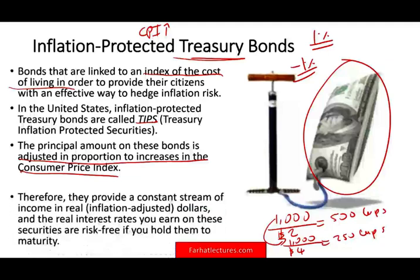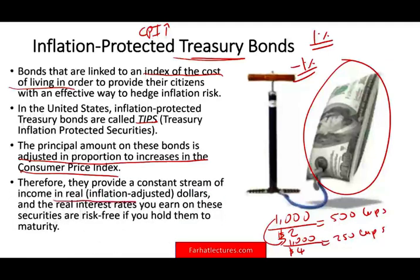TIPS provide a constant stream of income in real dollars. If inflation is 3% and they promised 2%, they'll pay you 3% — so in real terms your purchasing power stays the same. The real interest rate you earn on these securities is risk-free if you hold them to maturity. Every time treasury is involved, it's risk-free.